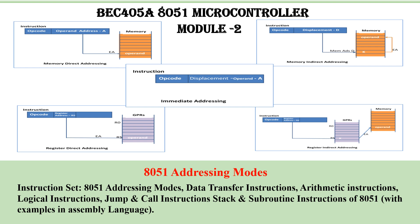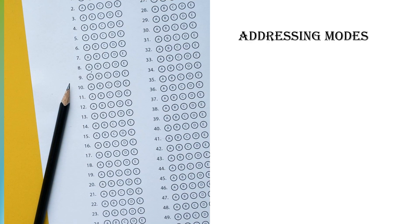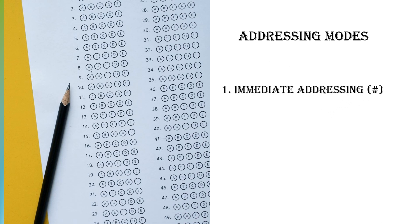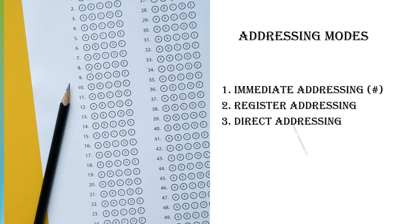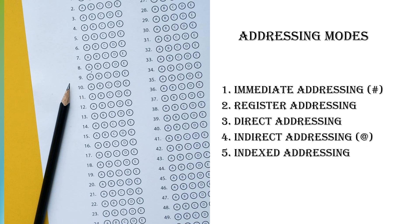Moving on to the topic, in this video you will be seeing the addressing modes. There are different addressing modes in the 8051 microcontroller: first is immediate addressing mode, second is register addressing, third is direct addressing, fourth is indirect addressing, and fifth is indexed addressing.